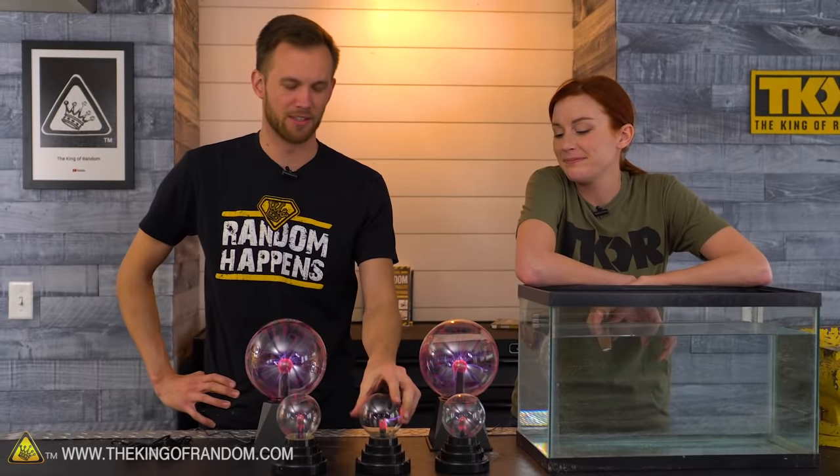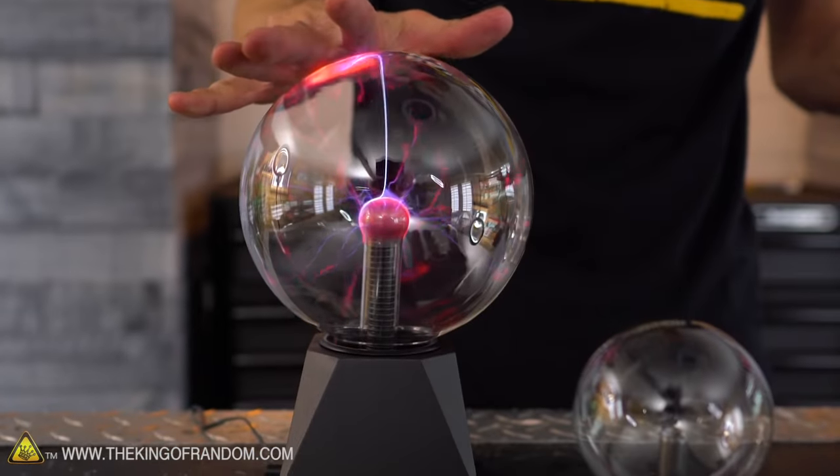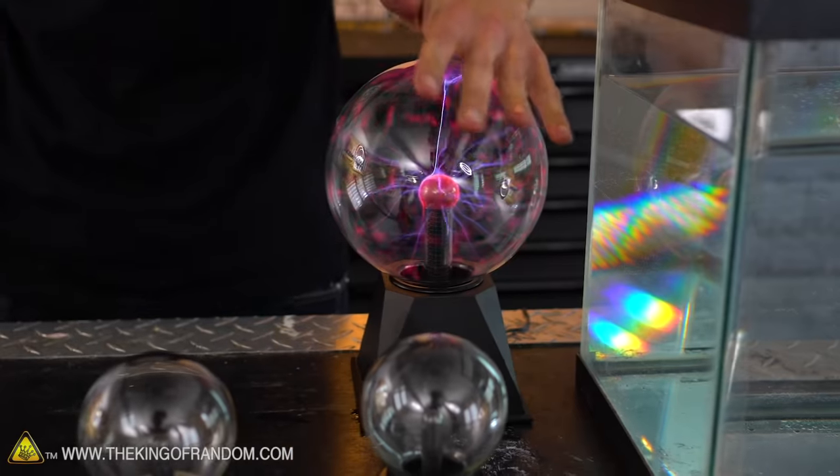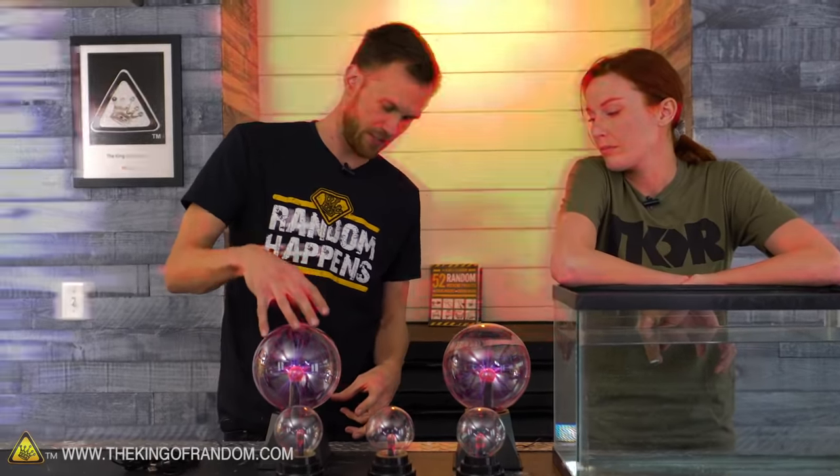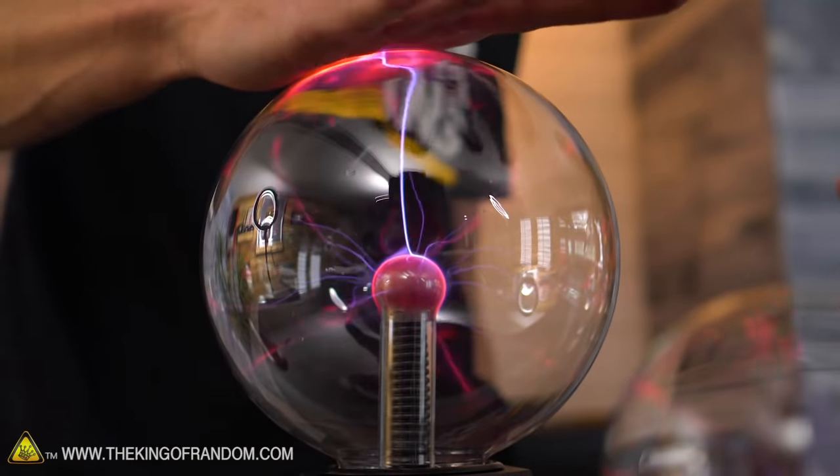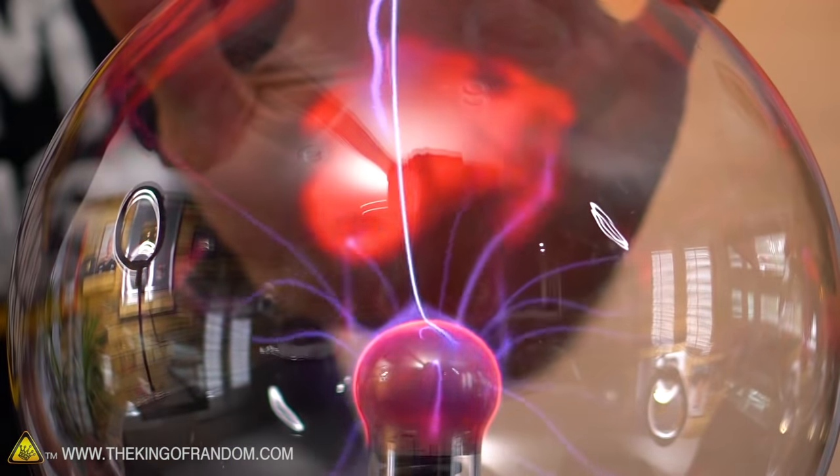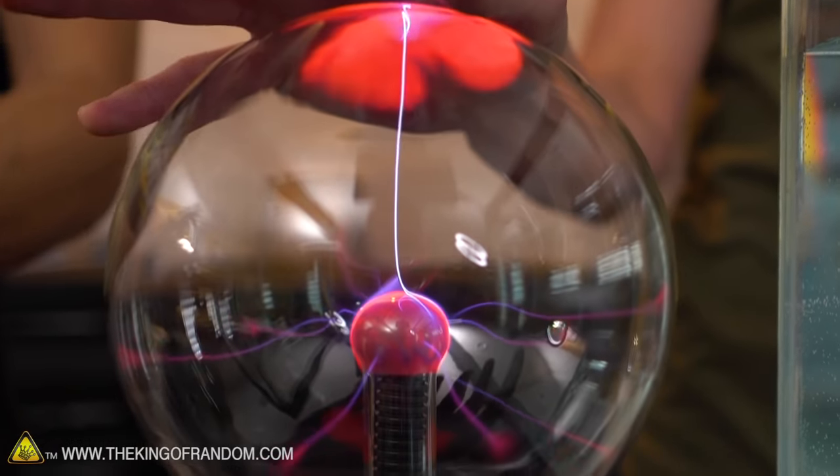If you've never seen these plasma globes, they're pretty fun. It's basically a tiny Tesla coil inside of a glass bulb, a funny-shaped glass bulb that specifically goes right over the Tesla coil. You add your hand as a path of electricity and all of those little tendrils move toward it.